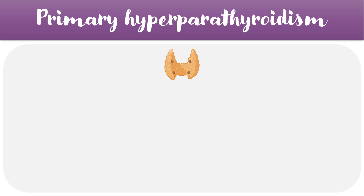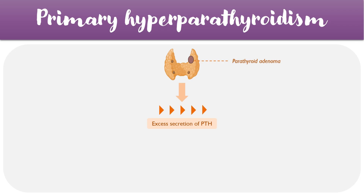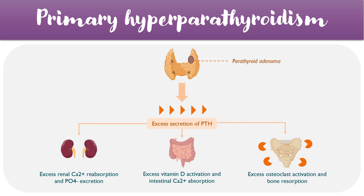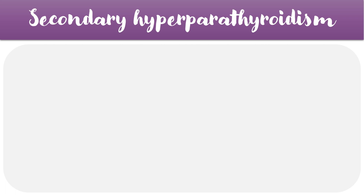The first type of pathology is primary hyperparathyroidism. The most common cause is an overgrowth of one of the parathyroid glands, usually a parathyroid adenoma. The adenoma secretes excess levels of parathyroid hormone into the blood, exaggerating all of the normal functions: increased calcium reabsorption and phosphate excretion in the kidneys, over-activation of vitamin D and intestinal calcium reabsorption, and excess osteoclast activation resulting in increased bone resorption. The overall findings are a high PTH level, high calcium level, and low serum phosphate.